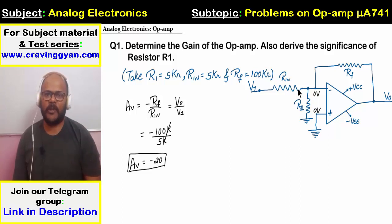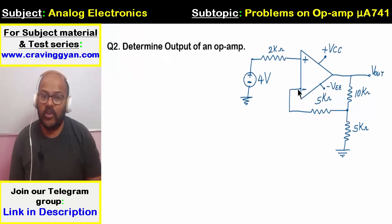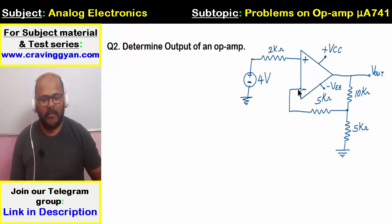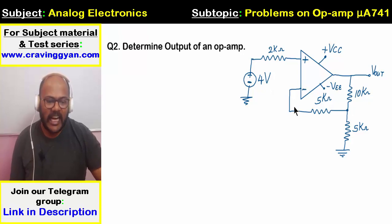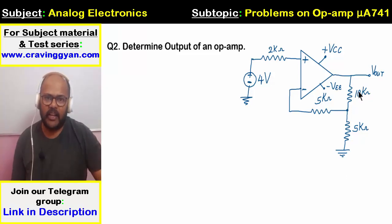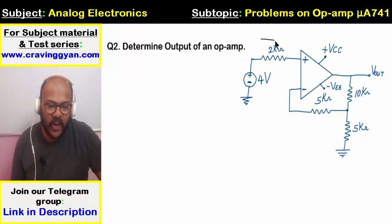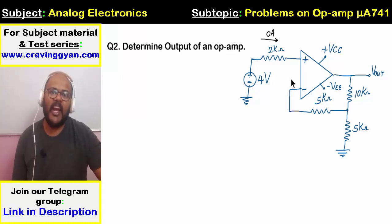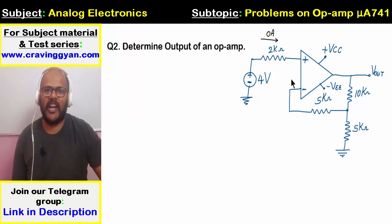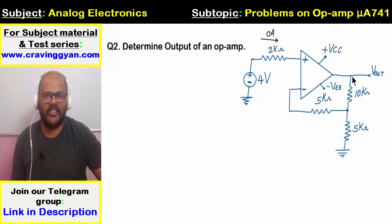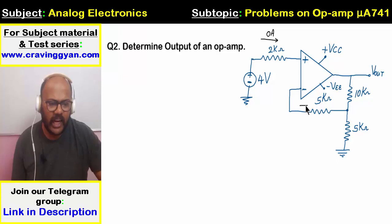Moving on to the second question: we have to determine the output of the operational amplifier. Again, the op-amp is in negative feedback and not in saturation, so virtual short is valid. The current getting into the operational amplifier is roughly 0 amperes — practically in the order of microamperes, but here we consider it zero.